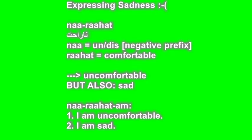Now let's go to expressing sadness. The word that we have for sad is narahat. Let me break it down for you. Na is a prefix that generally makes words negative, kind of like 'un' or 'dis' in English — like 'uncomfortable' or 'discomfort'. Rahat means 'comfortable', so narahat literally means 'uncomfortable'. It is true, you can use it in this sense — for example, when you're wearing tight shoes, you can use this adjective to describe the shoes. You can say narahatan, meaning 'they are uncomfortable'.